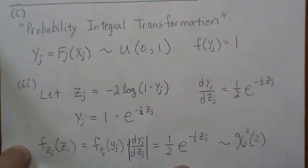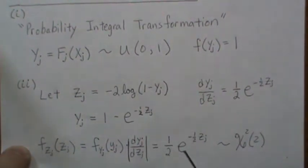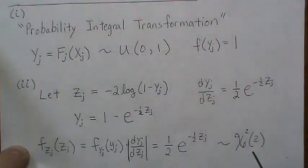We're left with this function here and as can be seen, that's a chi-squared with 2 degrees of freedom.